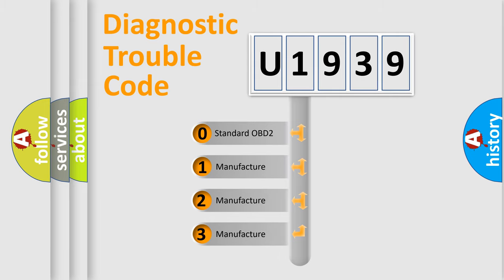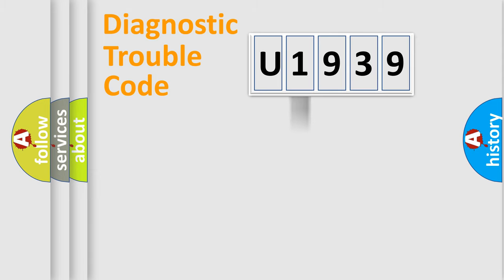If the second character is expressed as zero, it is a standardized error. In the case of numbers one, two, three, it is a manufacturer-specific expression of the car error.